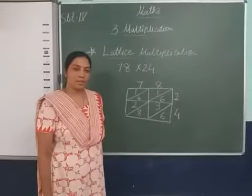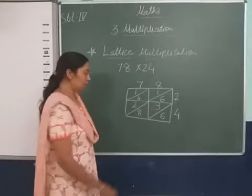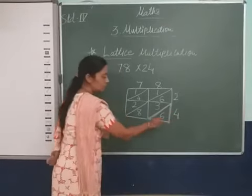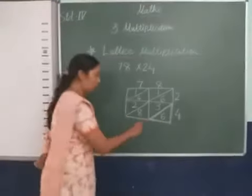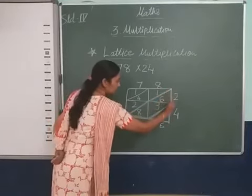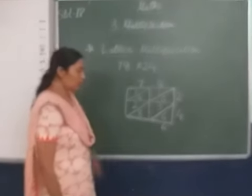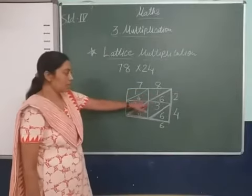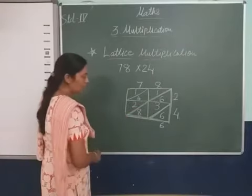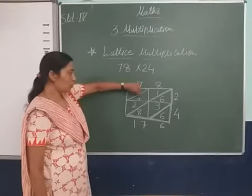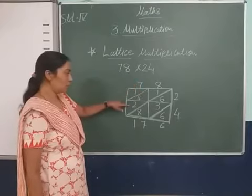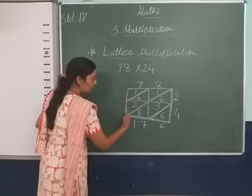Now what the next step is? We will sum of this diagonal. This diagonal, 6 we will write. The next diagonal: 6 plus 3 plus 8 equals 17. 9 plus 8 equals 17. We are adding this lattice.